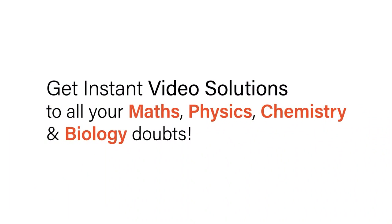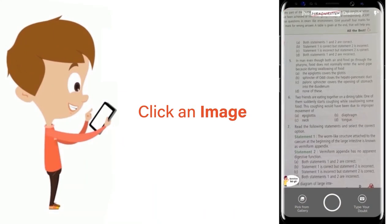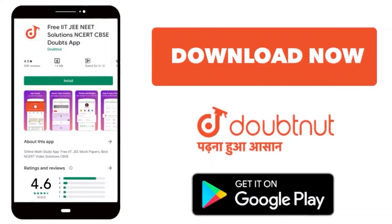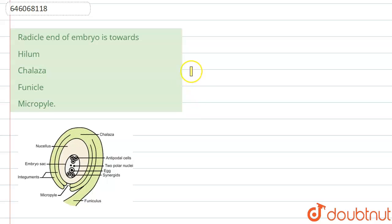With Doubtnet, get instant video solutions to all your maths, physics, chemistry and biology doubts. Just click the image of the question, crop it, and get instant video solution. Download Doubtnet app today. Hello student, the question is: radicle end of embryo is toward?